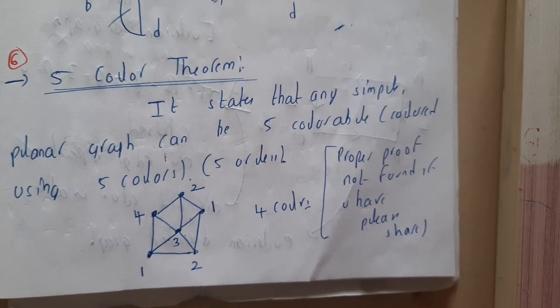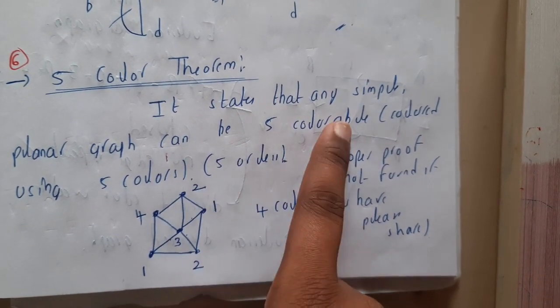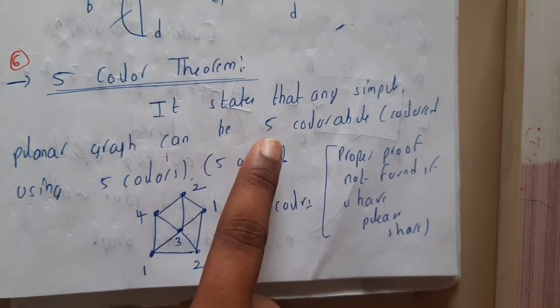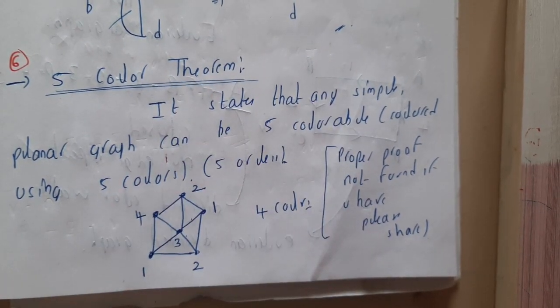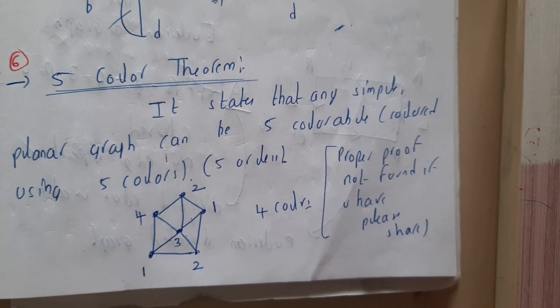It states that any simple planar graph can be colored just by using five colors. Basically, why it is saying a planar graph is that planar graphs are really tough to design when compared with normal graphs.